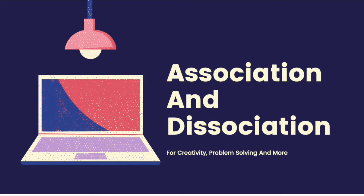Hello again, everyone. Welcome back to a new lecture. We're going to be talking about association and dissociation. It is a neurolinguistic programming system that harnesses the power of creativity and problem solving that you can take advantage of and change your life drastically. It's a very simple method, and neurolinguistic programming and most of the approaches in NLP are very logical.